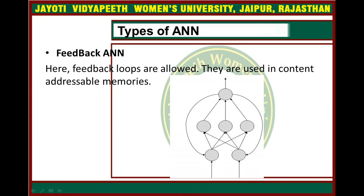The second type is Feedback ANN. In this, information goes forward but is also reverted back — that is why we call it feedback, meaning the information is sent back. Feed forward loops are allowed here, and they are used in content addressable memories.